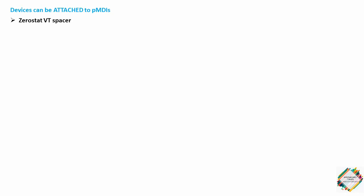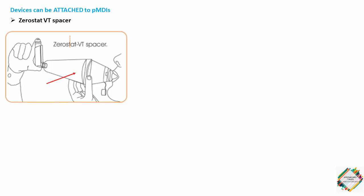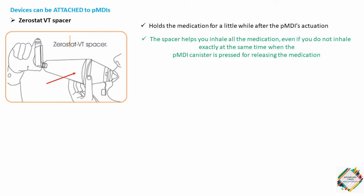Certain devices can be attached to PMDIs to ease their use. The first is the Zerostat VT spacer, which is attached to the PMDI and holds the medication for a little while after actuation. This means the spacer helps you inhale all the medication even if you did not inhale at exactly the same time as pressing the PMDI canister.